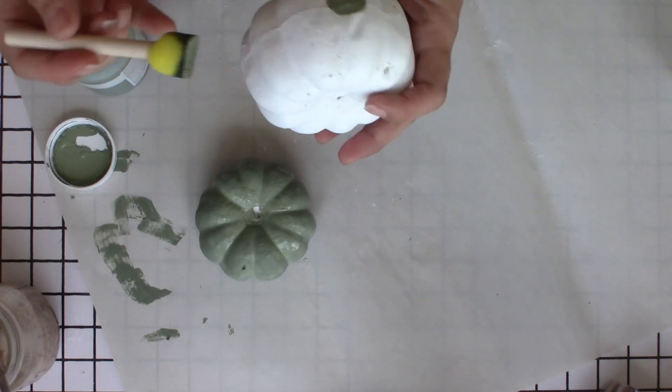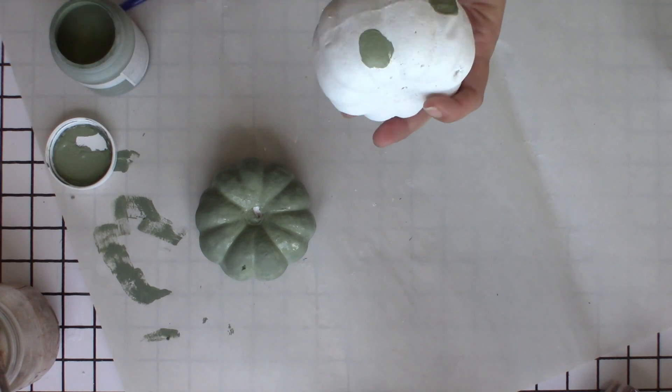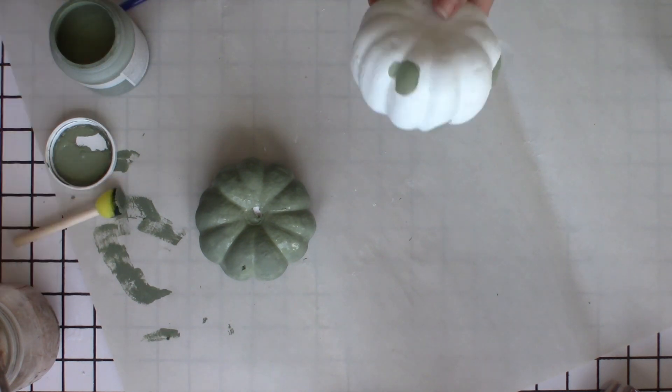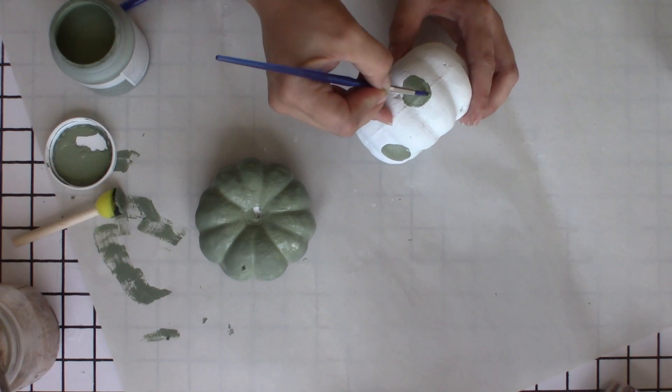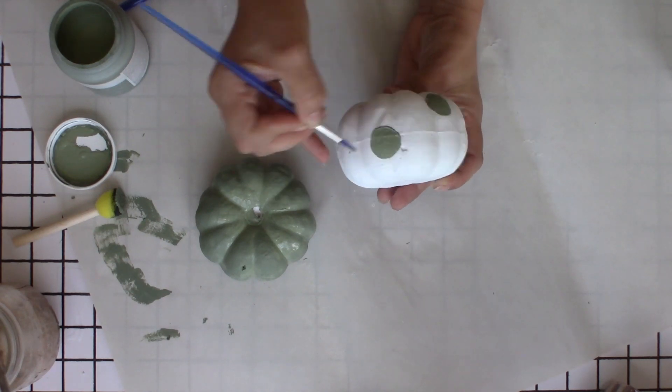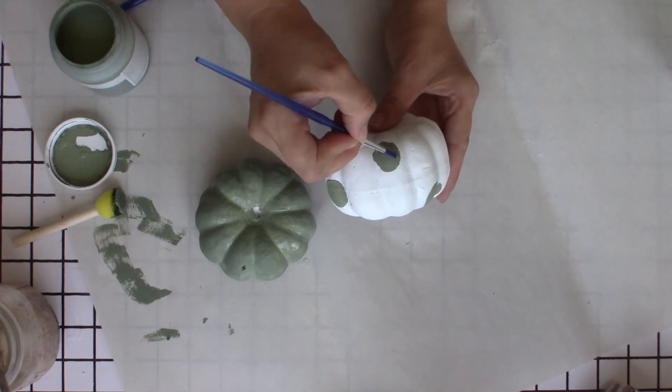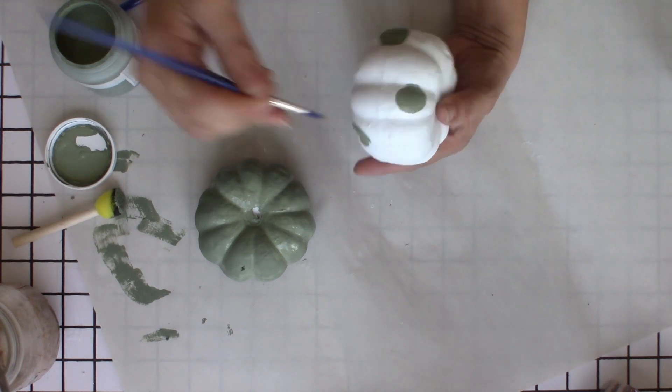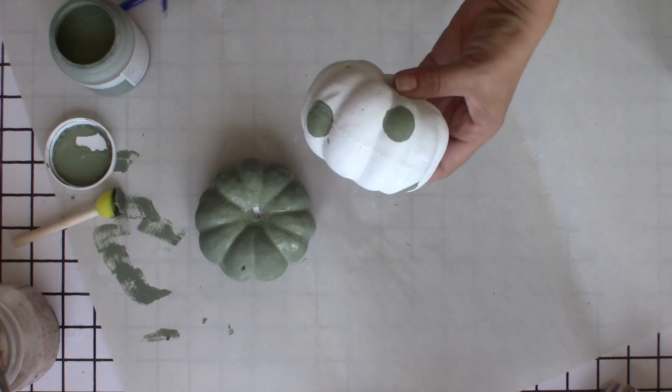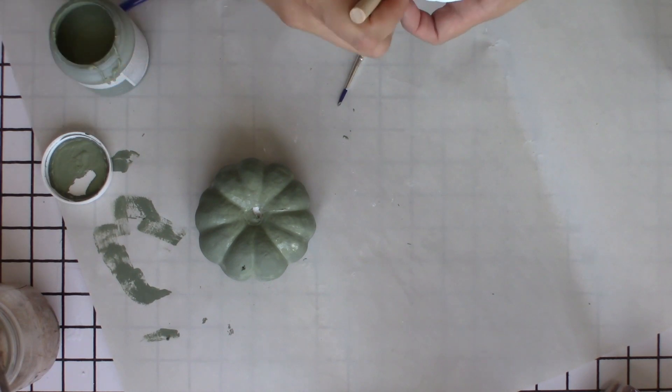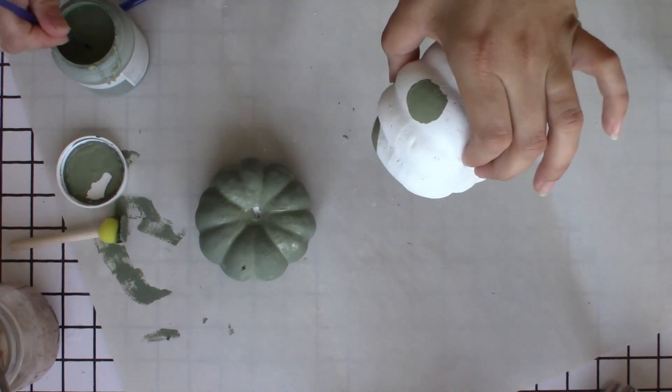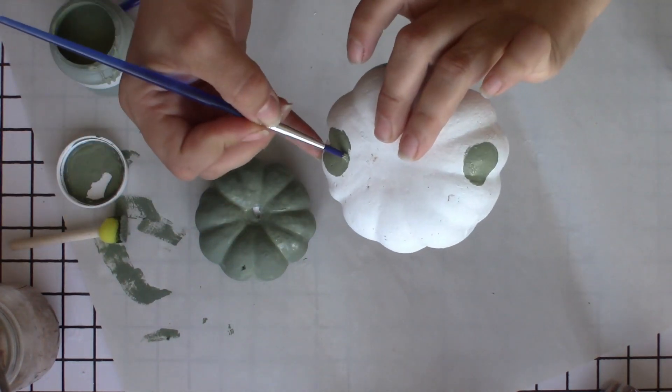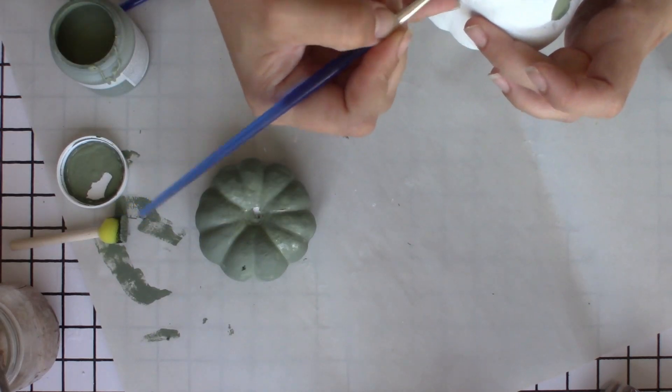Here, I'm using the stencil brushes from Dollar Tree. It comes in, I think, a three pack, but this is the smaller brush. I'm just painting little circles on the white pumpkin. Because it's an uneven surface, I had to kind of finish off the circles with just a regular paint brush, which actually wasn't as difficult as it seems.